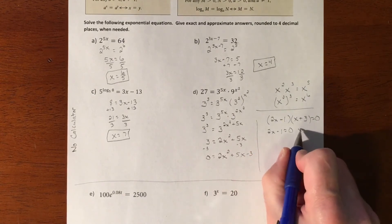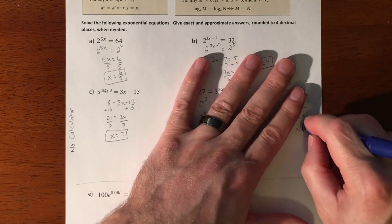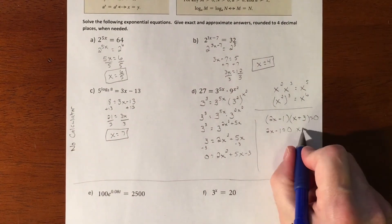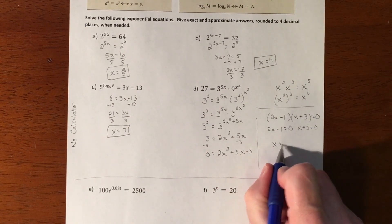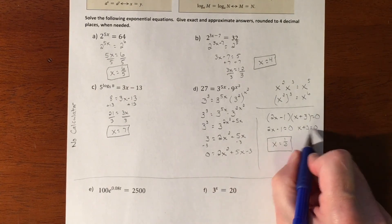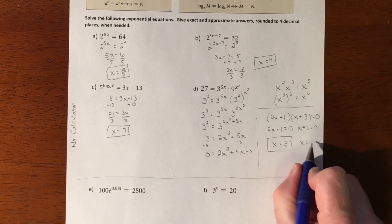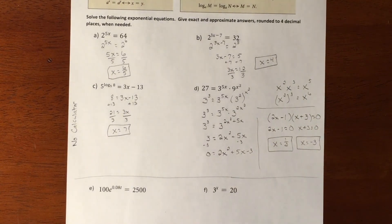So once I have my factors, I can set each of my factors equal to 0, and I'll get two solutions. So plus 3 equaling 0. So here we'll add 1, divide by 2, x equals 1 half. And then here we're going to subtract the 3 over, and x equals negative 3. All right, and so that was solving exponentials without having to use a calculator.